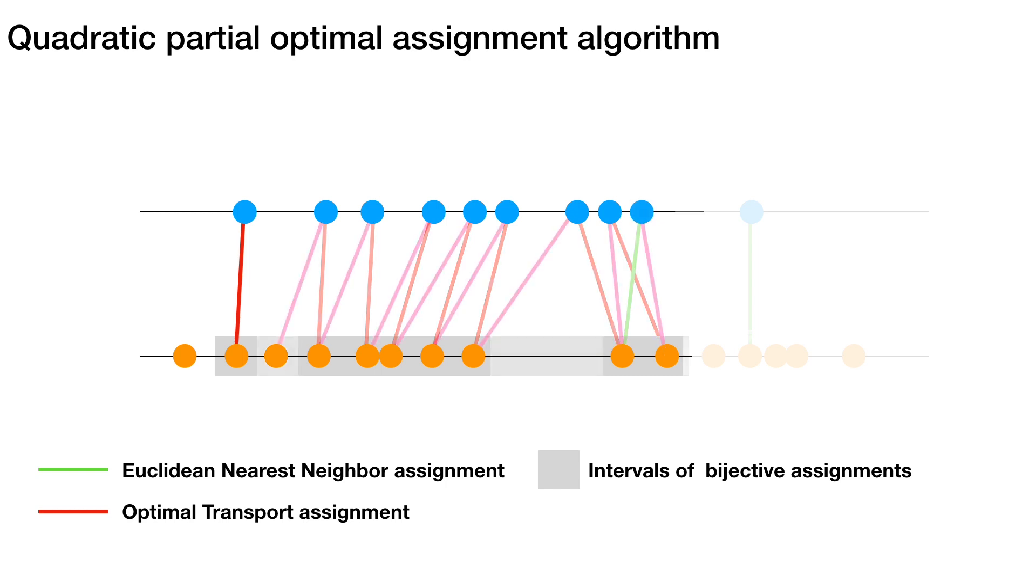Again for the ninth point, considering both options, we assign it to the right. The tenth point can finally be assigned to its nearest neighbor. This decomposes the solution into three contiguous intervals.